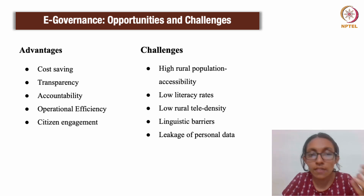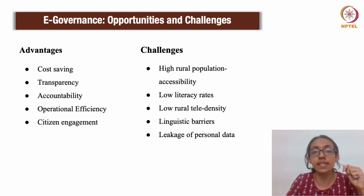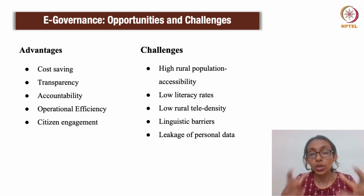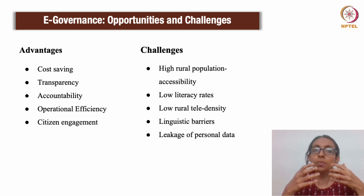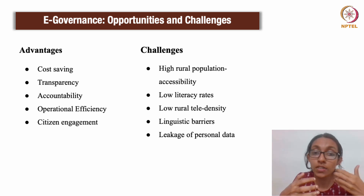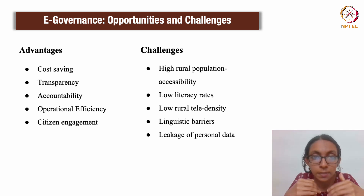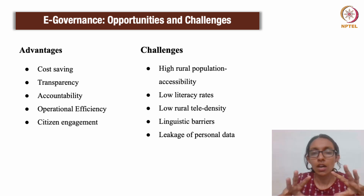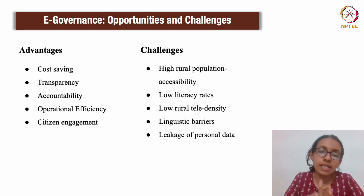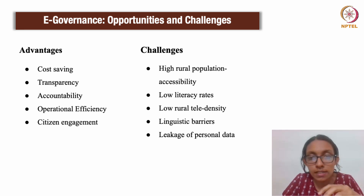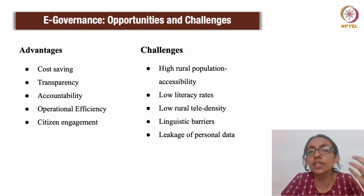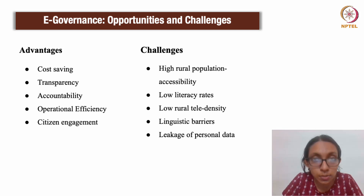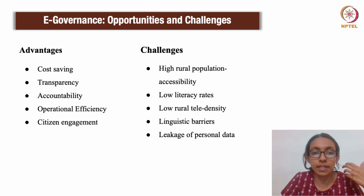Once citizens have access to the information provided by the government, they can hold the government accountable for its actions. Moreover, once things become automated, it is easier for the government to process information and deliver services more efficiently. It takes lesser time and there would be fewer errors while the government renders its functions, making it efficient overall. Lastly, it facilitates citizens to be more proactive in engaging with how governance is being carried out in the country, and they can interact more closely with the government.